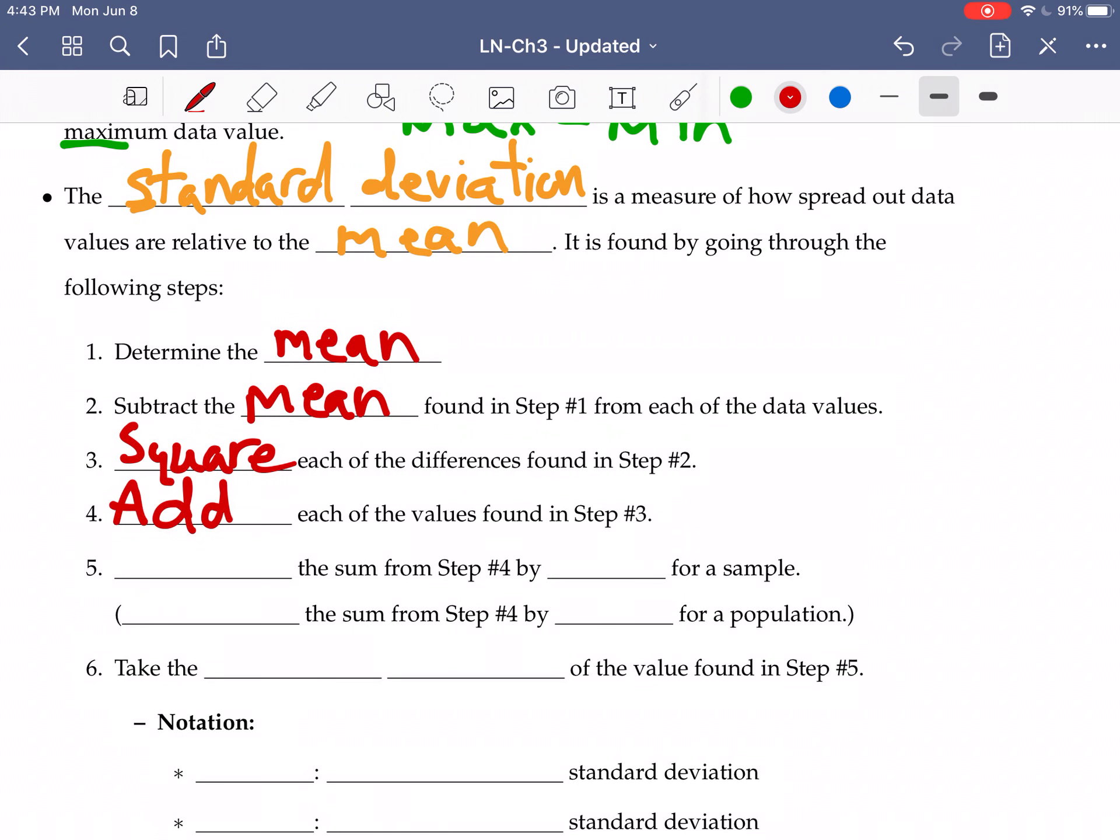Once we've added up all of those squares, we are going to divide. We divide the sum found in step four by n minus one, one less than the size of the sample. So when we deal with a sample, we take one less than the sample size. Or if we're dealing with a population, we divide just by the size of the population, which we'll use a big N to represent the size of a population, little n to represent the size of a sample.